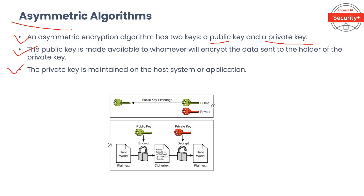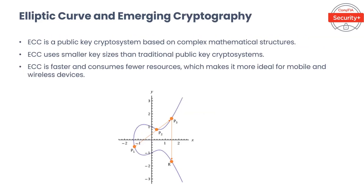Let's talk about asymmetric algorithms. An asymmetric encryption algorithm has two keys: a public key and a private key. The public key is made available to whoever will encrypt the data sent to the holder of the private key. The private key is maintained on the host system or application. The public key is often made available through email or on centralized servers hosting published public encryption keys. One challenge is ensuring the authenticity of a public key. To address this, a public key infrastructure (PKI) is often used — a PKI uses trusted third parties that certify or provide proof of key relationship or ownership. Asymmetric algorithms are often referred to as public key algorithms.